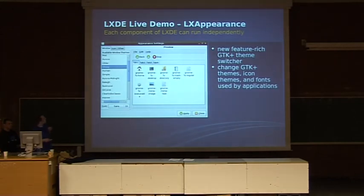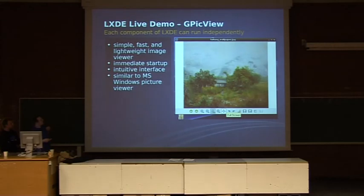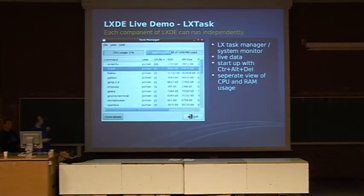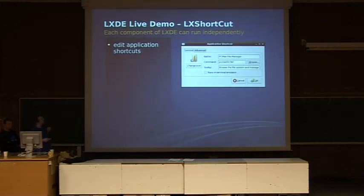Here we have the user interface appearing settings. We have an included picture viewer which loads pictures very, very fast. It's pretty simple, but you can click through images with the buttons, change the rotation, whatever. Here we have the task manager — also a simple one, but it does everything you need. We have a tool to edit and create application shortcuts on the desktop and in the menu.